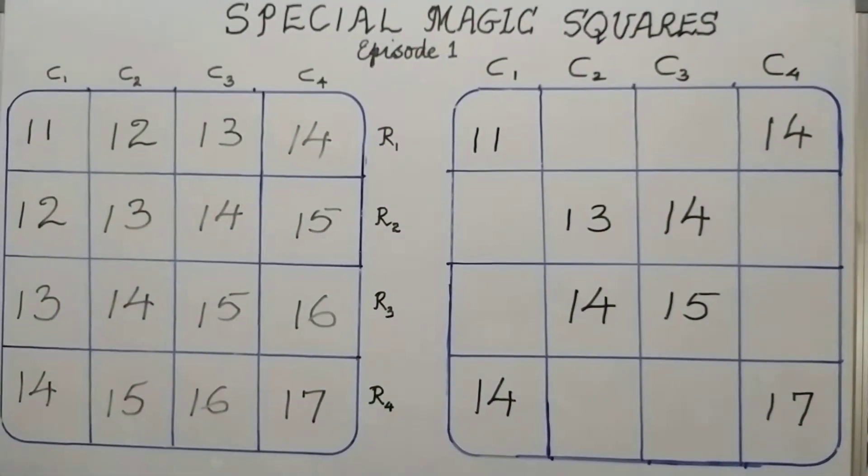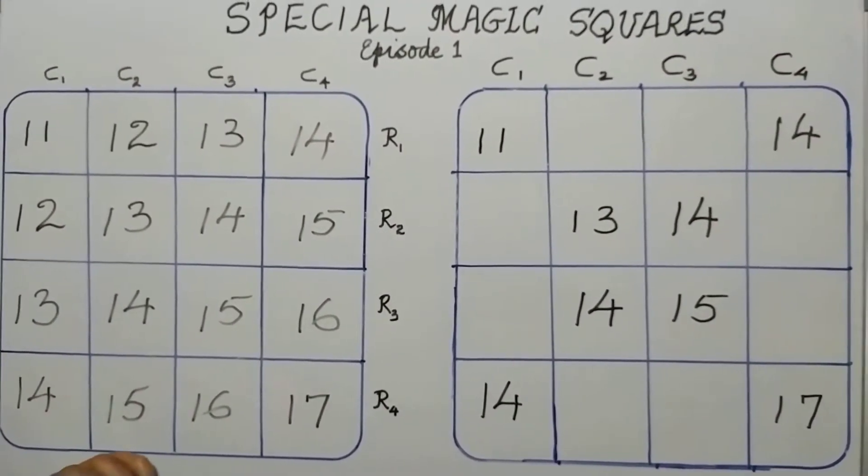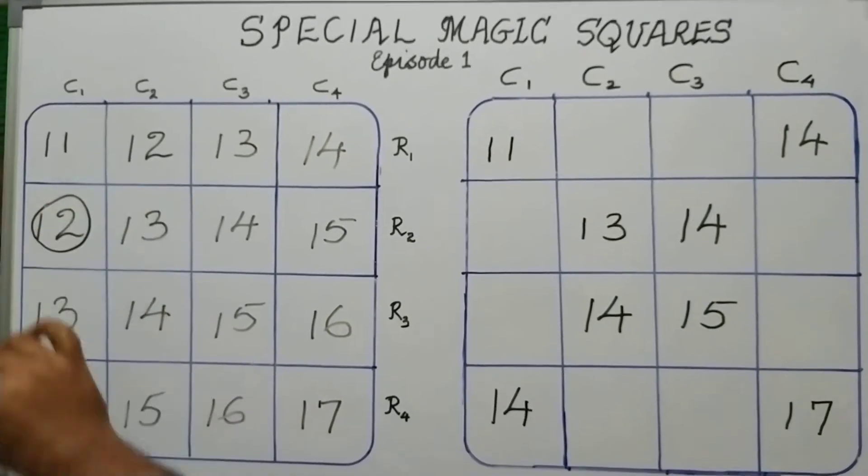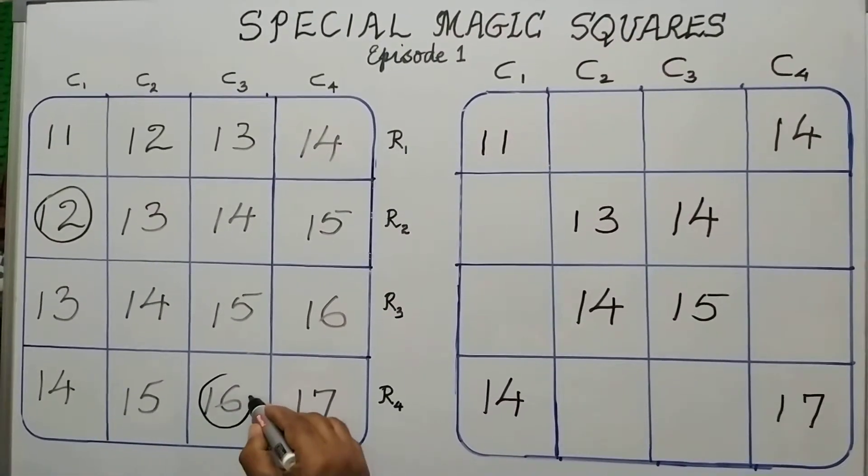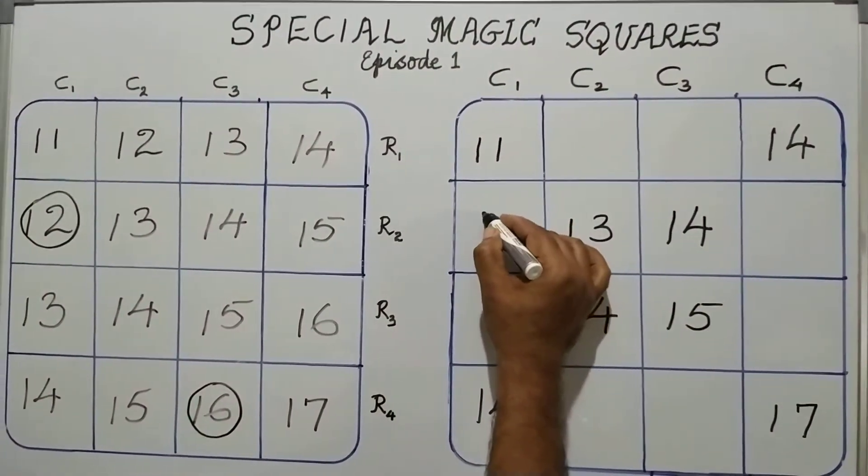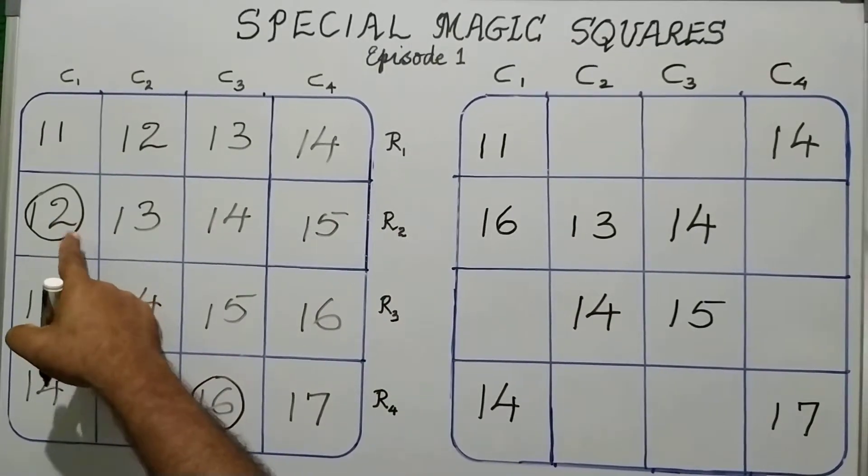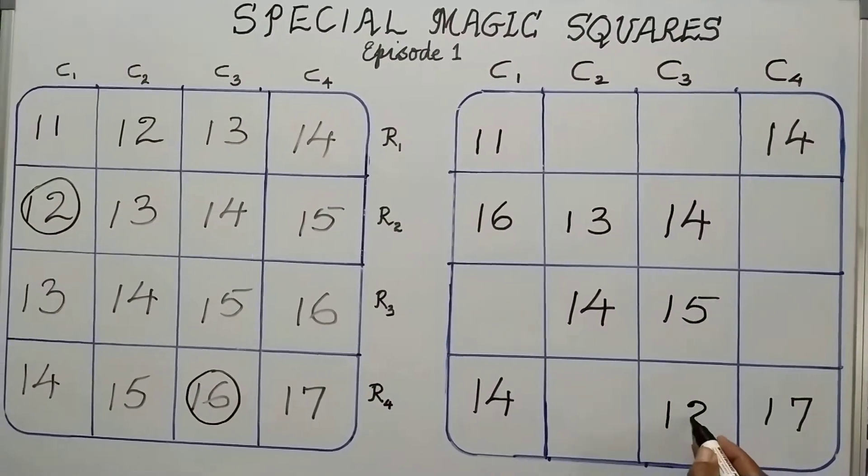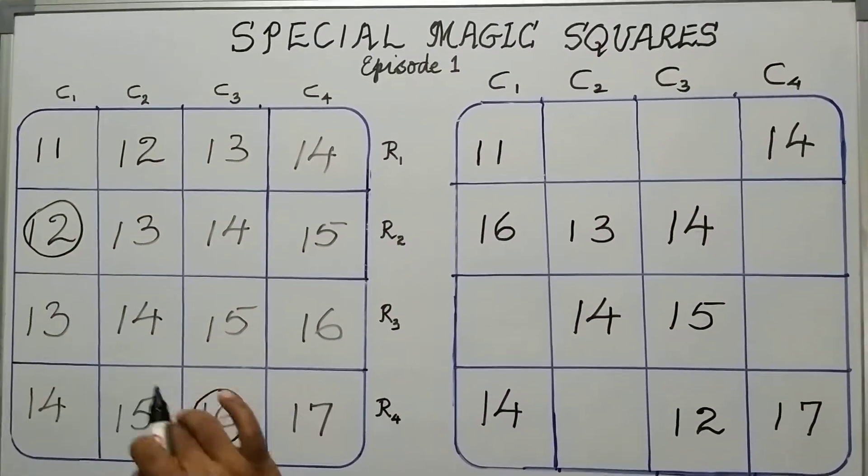From the base square, in the first column, the second element, which I am showing you using a small circle, and in the third column, the last element, 16, these two, I will interchange and write. So, in the final square, 16 comes in the place of 12 and 12 comes in the place of 16. These two circled elements are interchanged.